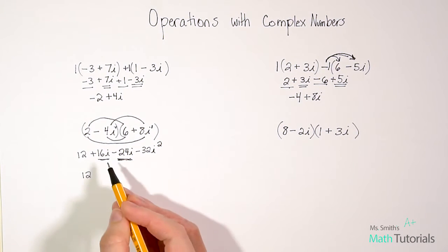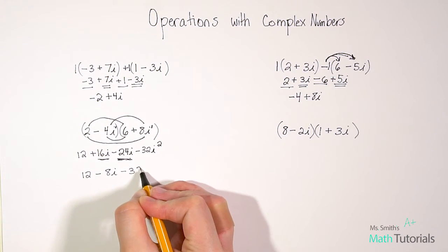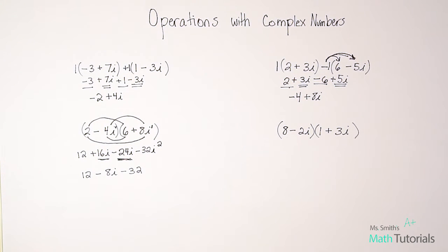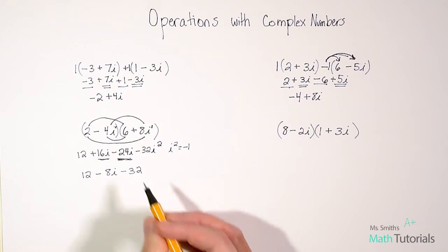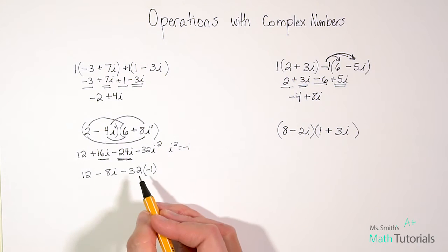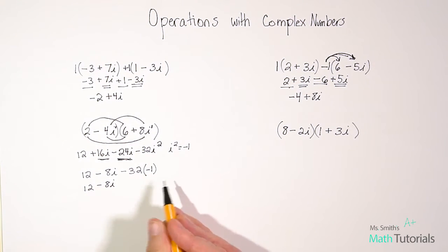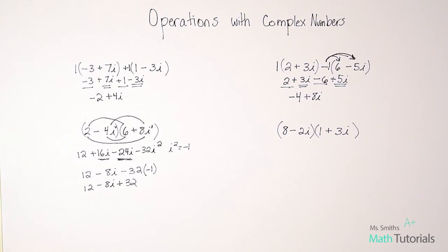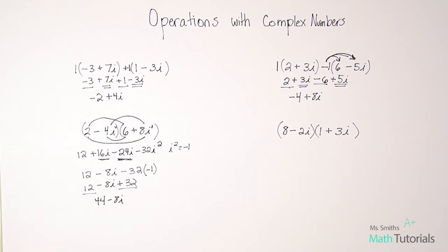Let's combine the middle like terms: 16i minus 24i gives negative 8i. Then negative 32 times negative 1 equals positive 32. Now I have additional like terms to combine: 12 plus 32 equals 44. So our final simplified answer is 44 minus 8i.